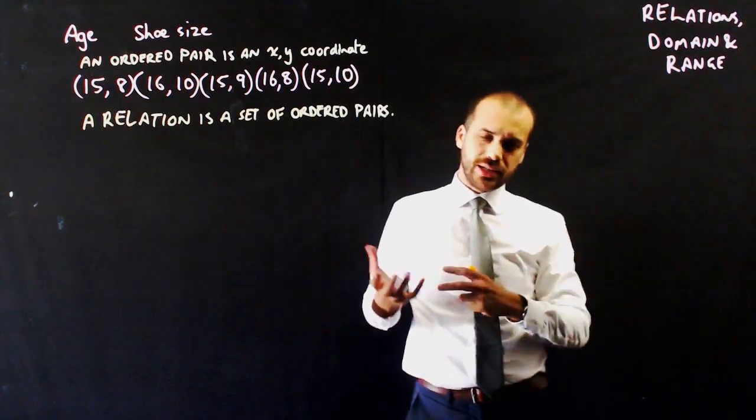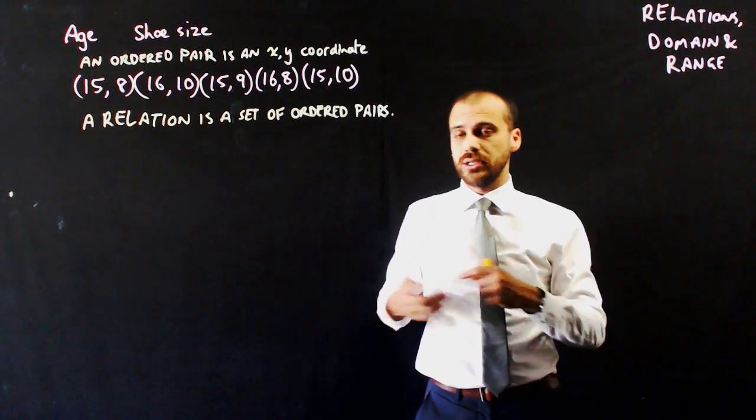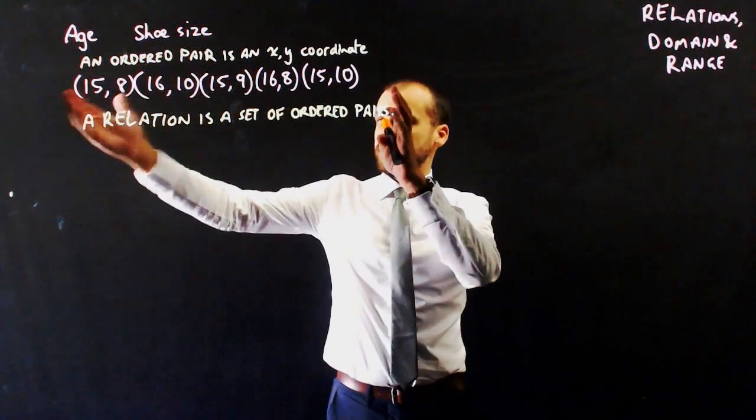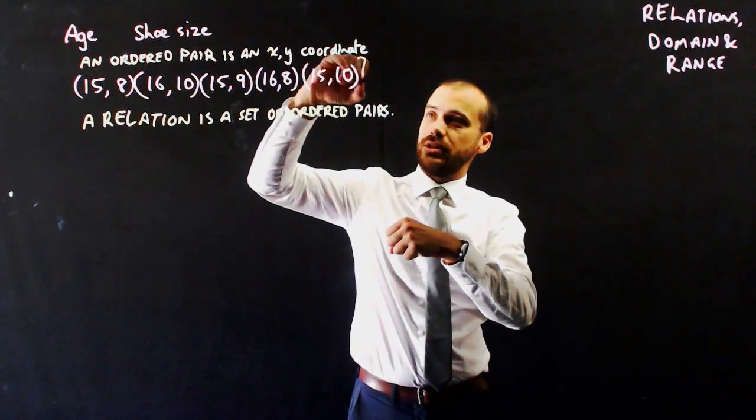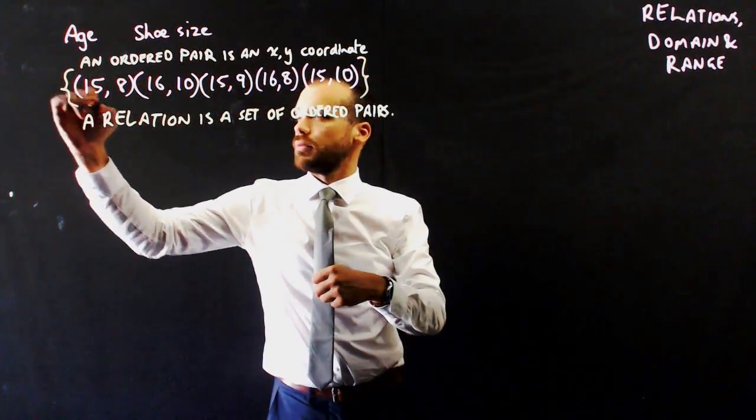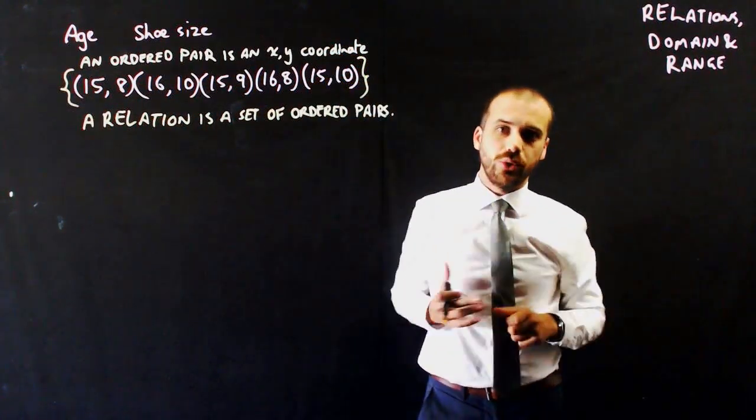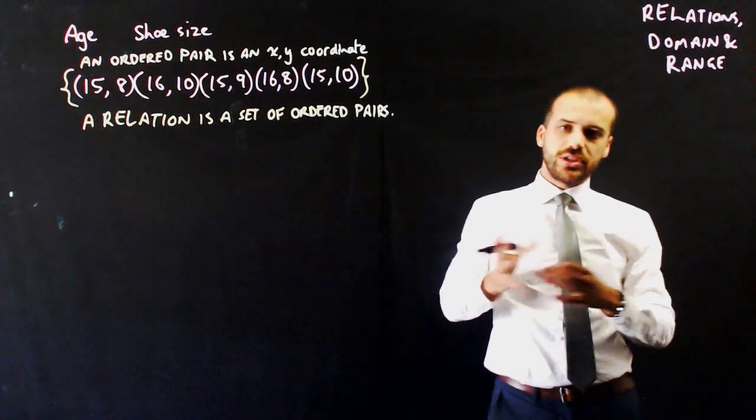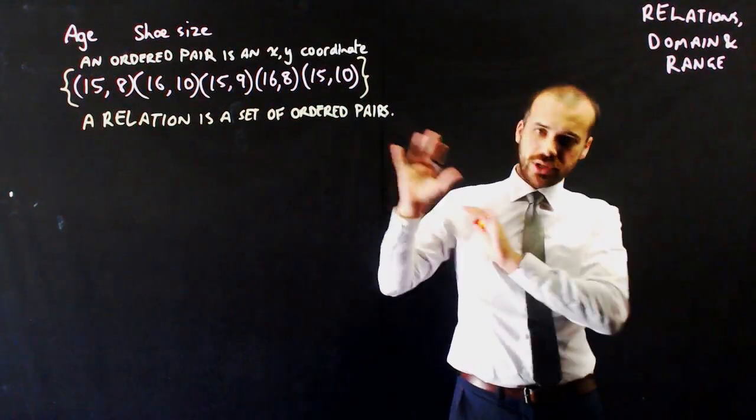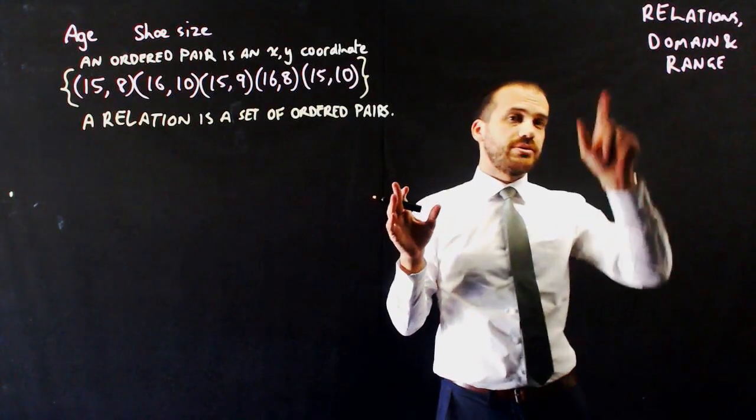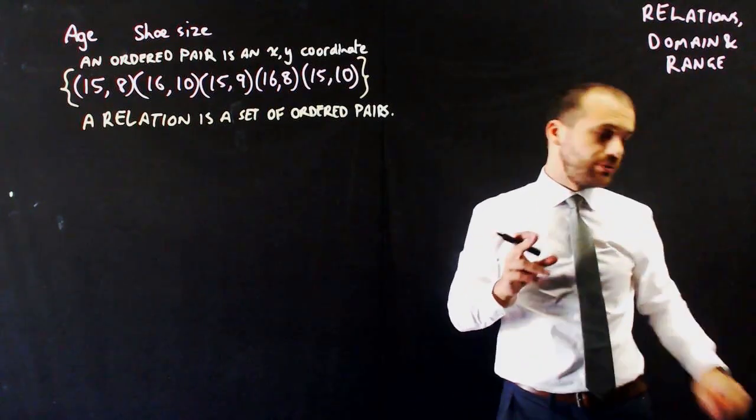So we've talked a little bit about sets when we were doing probability. This is a set, and we can put some sort of curly brackets around it. This is a set of ordered pairs. We can do a few things with those ordered pairs. But before I do get into those, I'm going to talk about the other important bits of this video, which are domain and range.